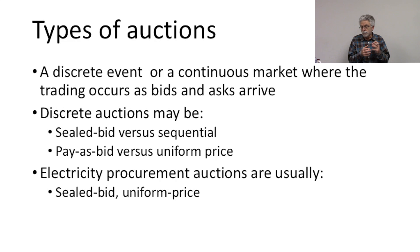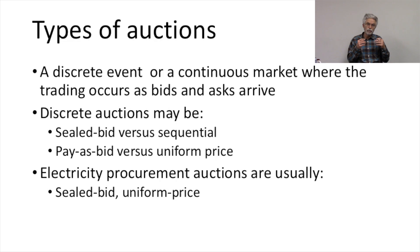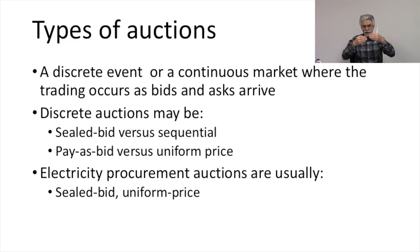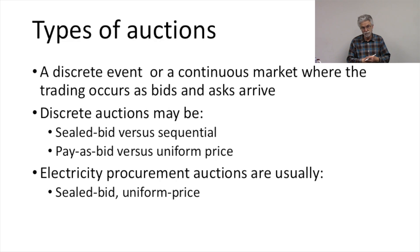An auction can be either a discrete event or a continuous market where trading occurs as bids and asks arrive. You could think of a double-sided auction where buyers are making offers to buy and sellers are making offers to sell, and these are being matched whenever there is a beneficial trade to be made, so there could be a continuous process of buyers and sellers meeting each other.